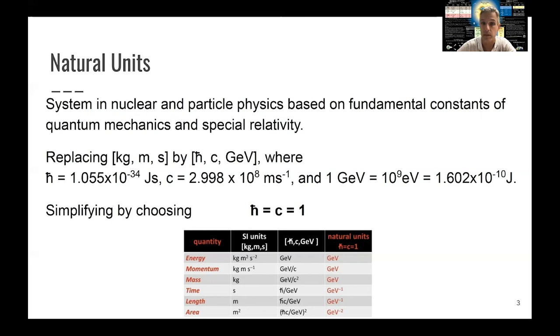Time has a unit of 1 over GeV. Length has a unit of 1 over GeV. And area has a unit of 1 over GeV squared. So that's the simplification.